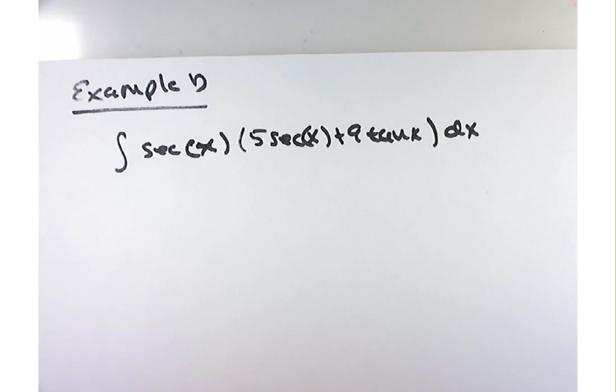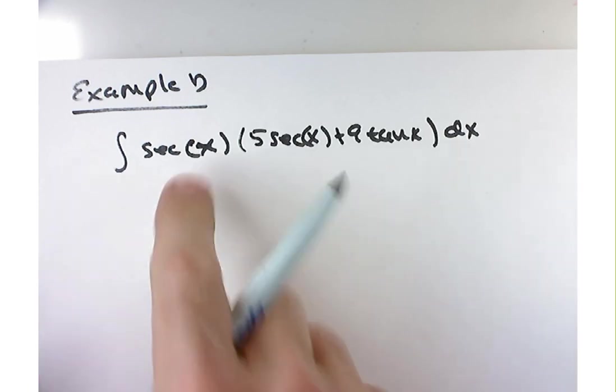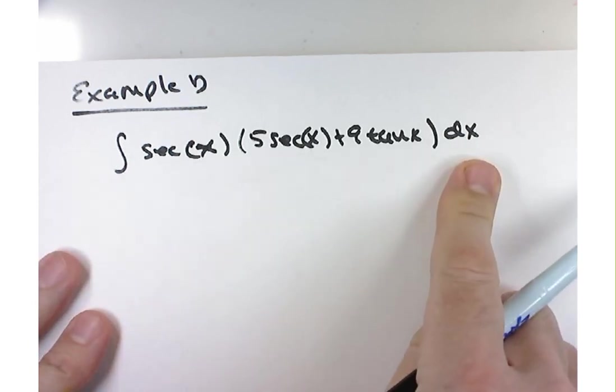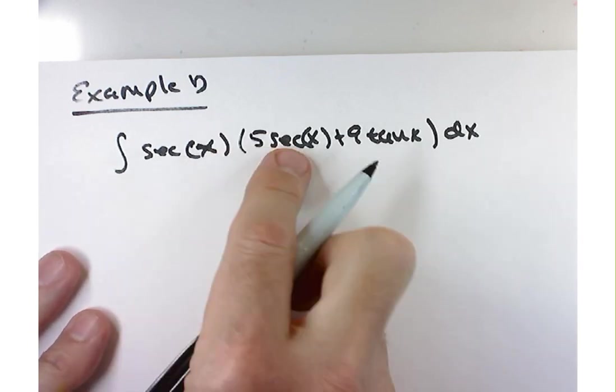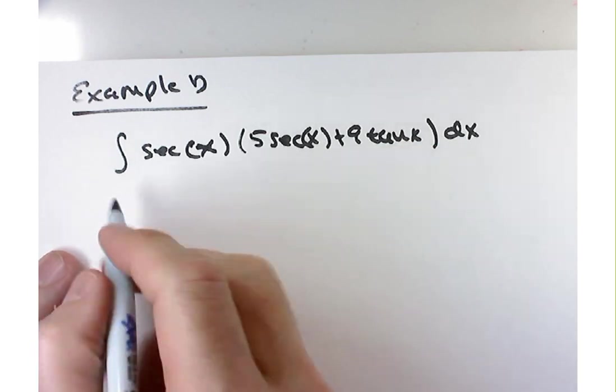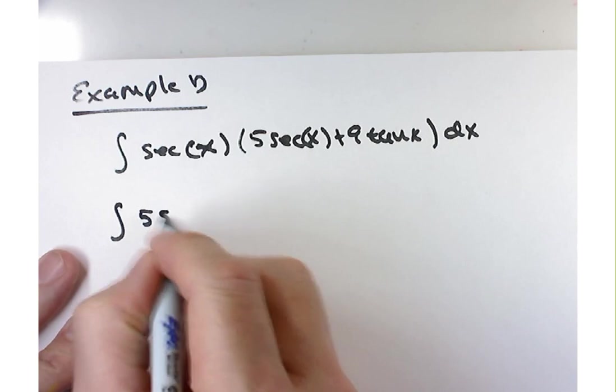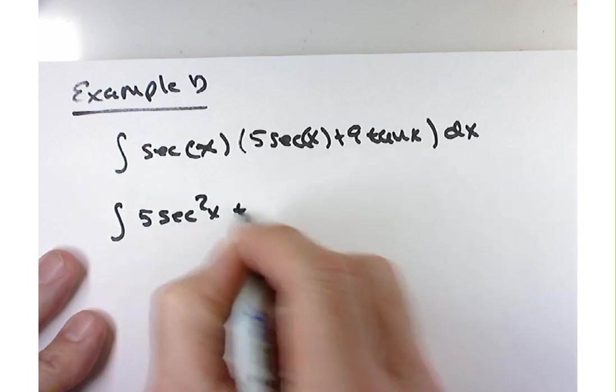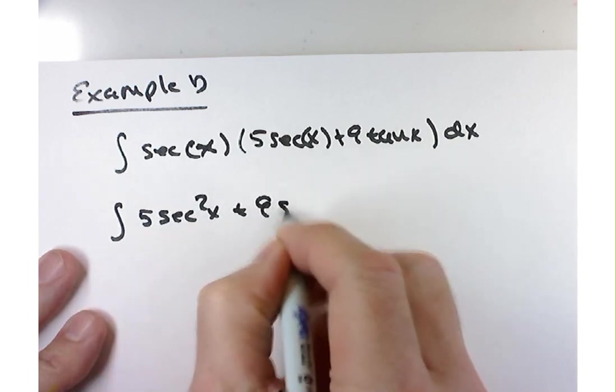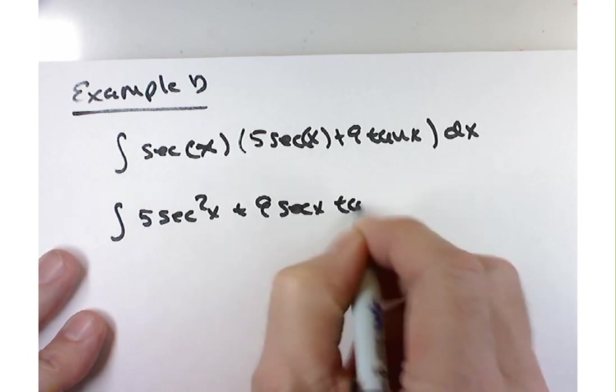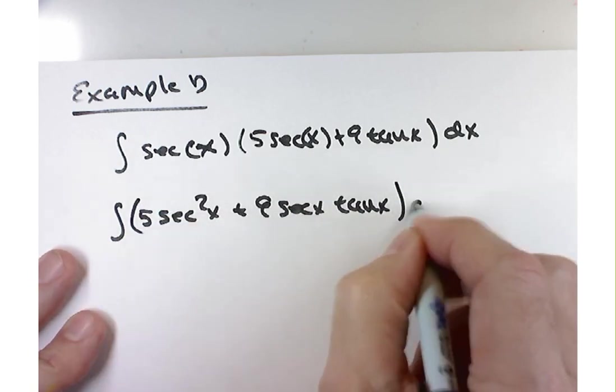Well, I guess the one rule that you have to keep in mind when you're working with integrals is you've got to make them look like something you can find the antiderivative of. And I can't find the antiderivative of a product like this. I just can't. I don't know what it is. But I can distribute the secant. I can play around with this. And that would give me 5 secant squared of x plus 9 secant of x tangent of x dx.